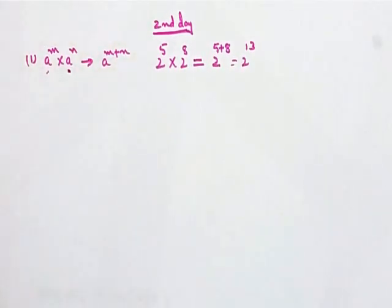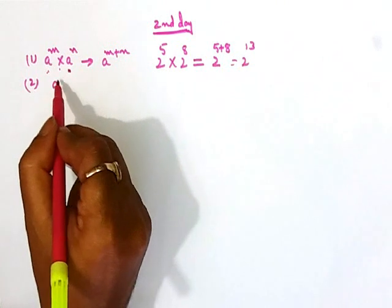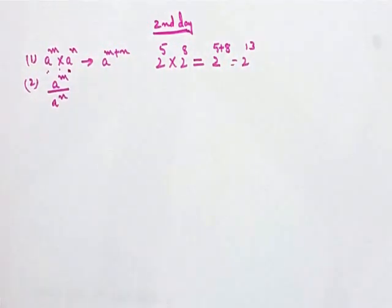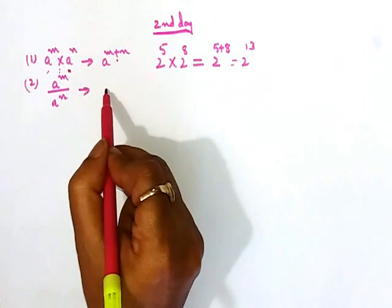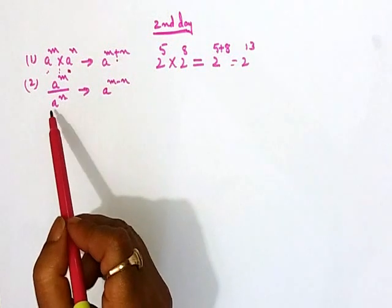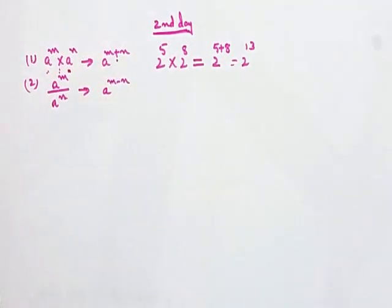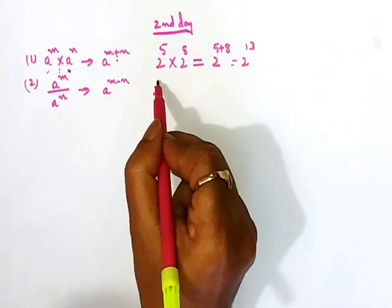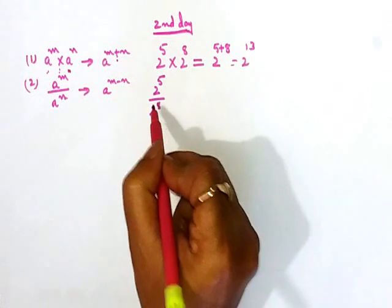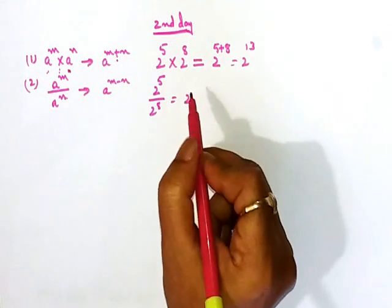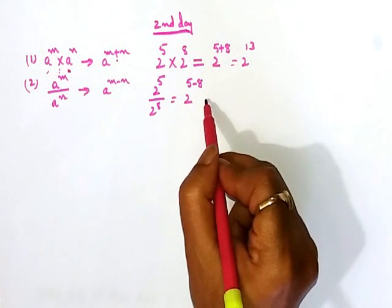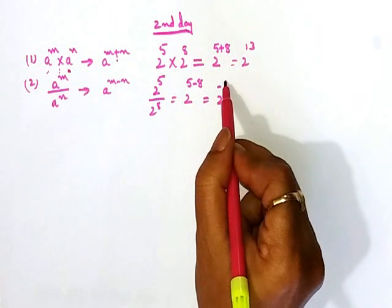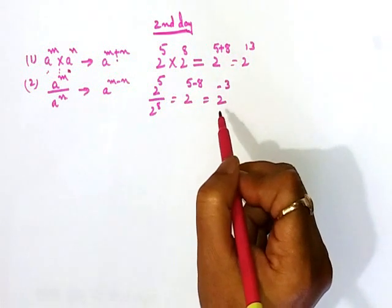Now let's go to the second rule. For division, that is a to the power m upon a to the power n — if for multiplication it is plus, then naturally for division it will be minus. So the result is a to the power m minus n. This is applicable when the bases are similar. For example, 2 to the power 5 by 2 to the power 8 equals 2 to the power 5 minus 8, which gives 2 to the power minus 3.